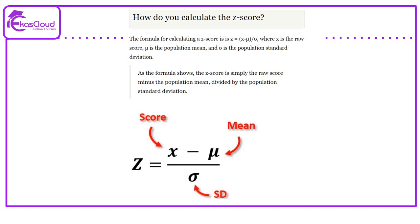As the formula shows, the z-score is simply the raw score minus the population mean divided by the population standard deviation. Z equal to x minus mu divided by sigma.